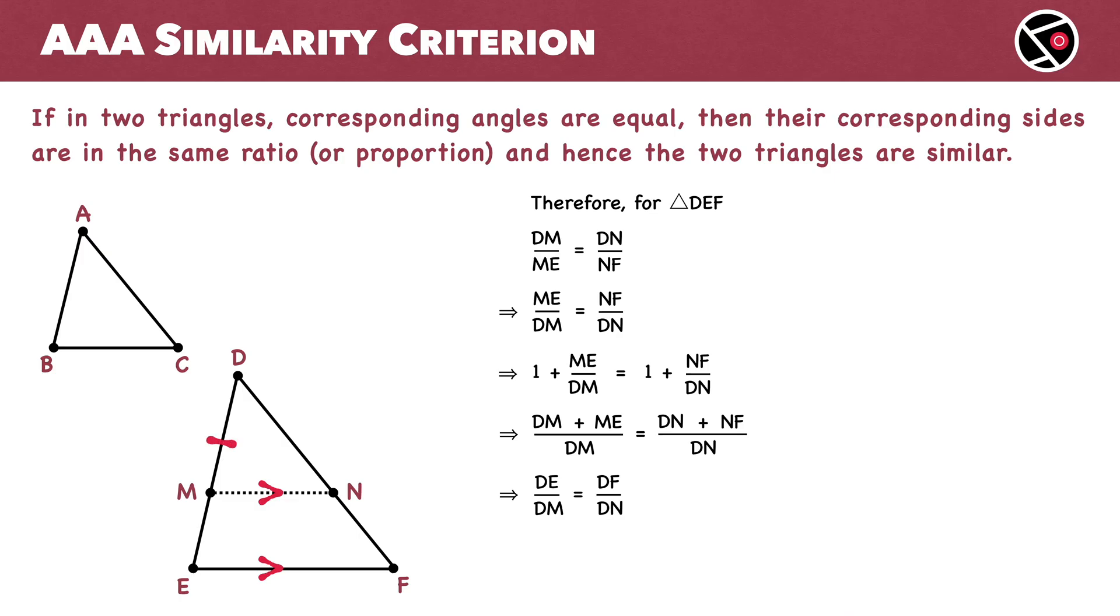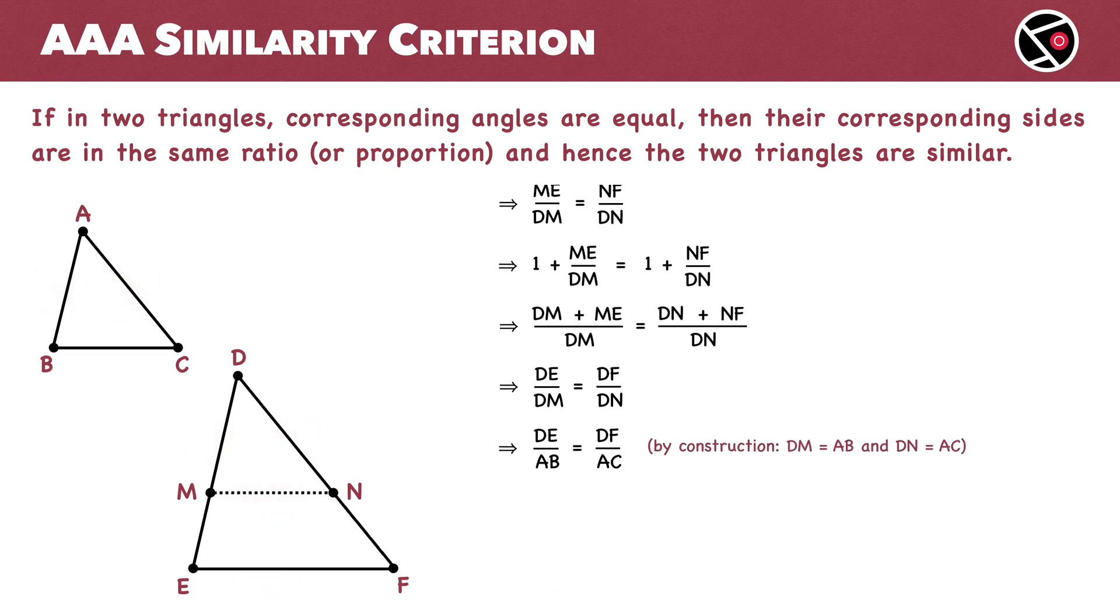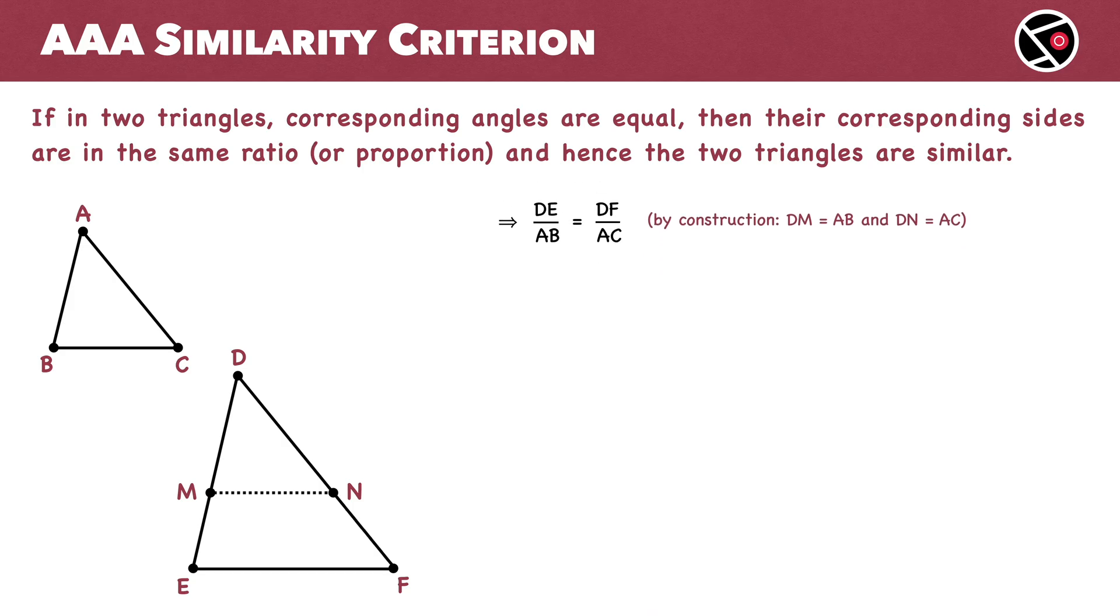Further, DM equals AB and DN equals AC. So we replace DM with AB and DN with AC to get the appropriate ratios. Taking the reciprocal again gives us AB by DE equals AC by DF. This is Equation 4.